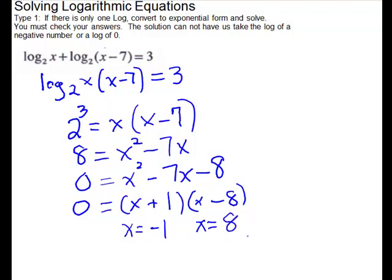You have to check both answers. When we plug in negative 1, we get log base 2 of negative 1 — you're not allowed to take the log of a negative number, so this one is rejected. We try 8: log base 2 of 8 is okay. And 8 minus 7 gives us 1, and it's okay to take the log of 1. So our answer is 8.